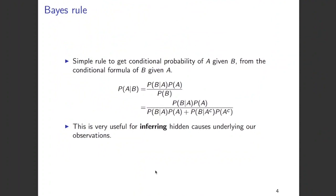Hi everyone. In this video, we are going to talk about Bayes' rule. It's a simple rule to get the conditional probability of A given B from the conditional probability of B given A.